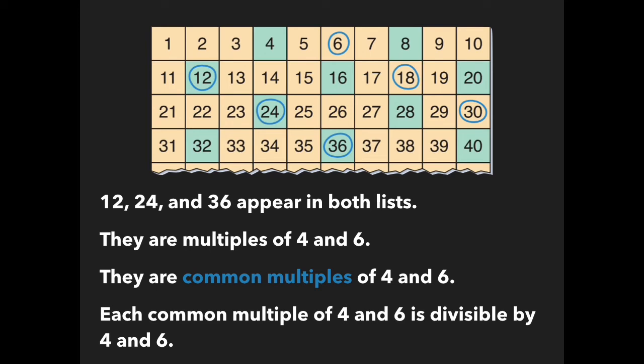As you can see, the numbers 12, 24, and 36 appear in both lists. They are multiples of 4 and 6. They are common multiples of 4 and 6. Each common multiple of 4 and 6 is divisible by 4 and 6.